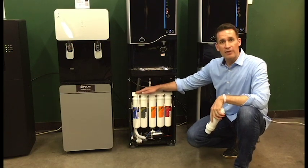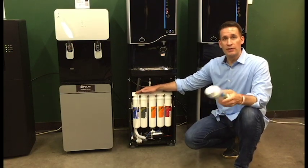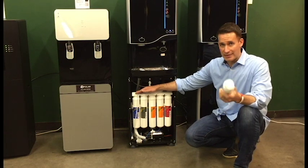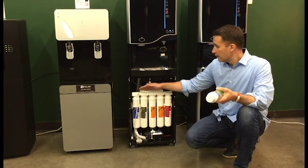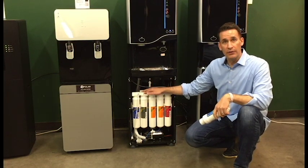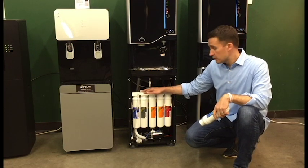We start with a sediment filter that removes the really coarse stuff such as sand, dirt, and hair. Next it goes to a carbon filter that removes chlorine and some of the chemicals.